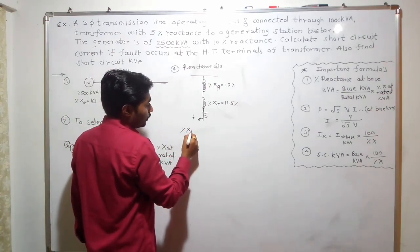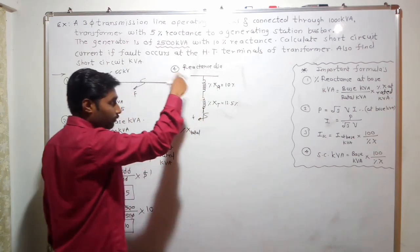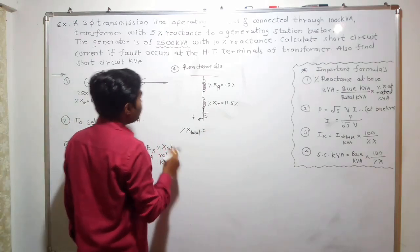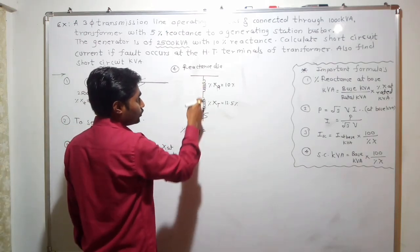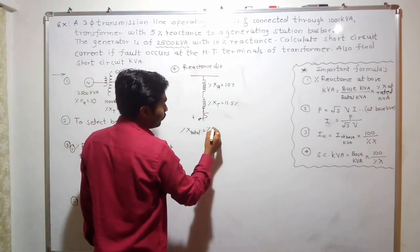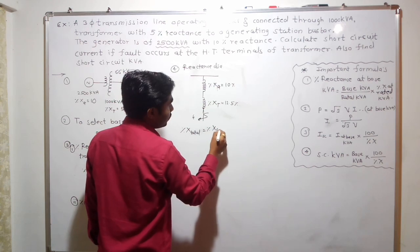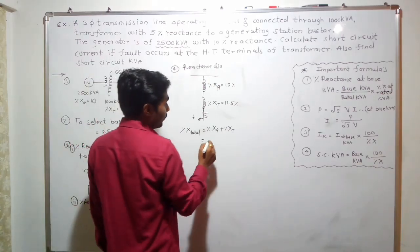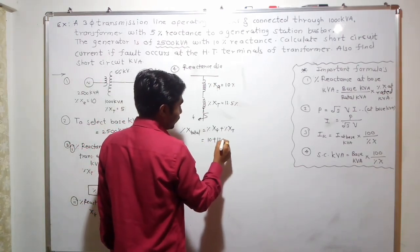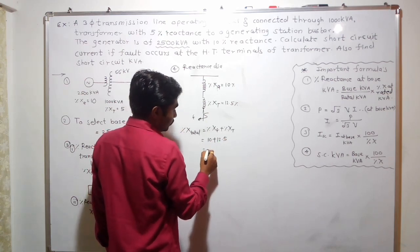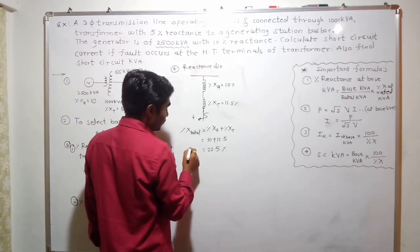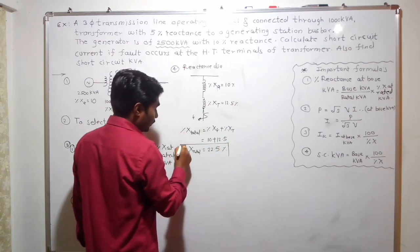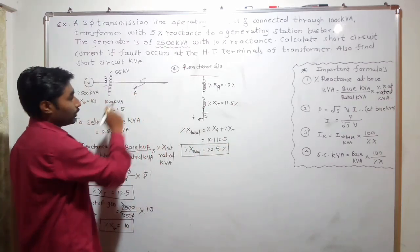Now we calculate the total reactance of the circuit till the point of fault. Since the generator reactance and transformer reactance are in series, we add them: percentage XG + percentage XT = 10 + 12.5 = 22.5%. This is the total percentage reactance of the circuit till the point of fault.